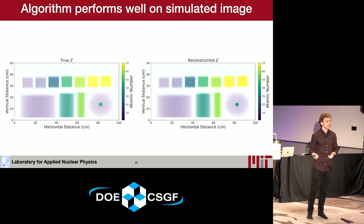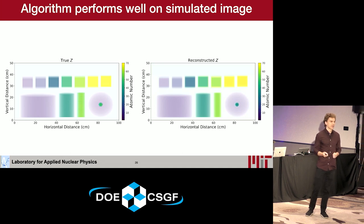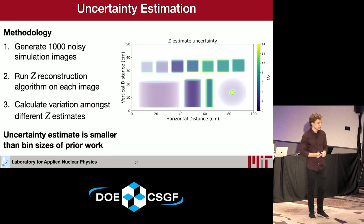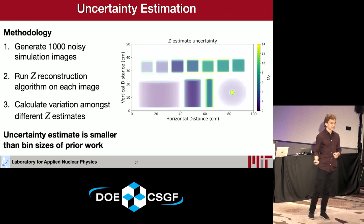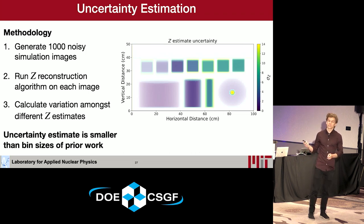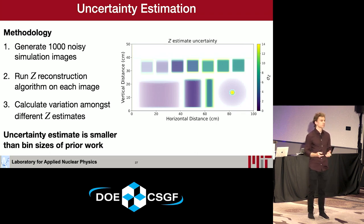The results look quite good. The left shows the ground truth atomic number of the simulated radiograph, and the right shows the output of the reconstruction framework. You can see by the color bar — which denotes atomic number — that the reconstructed Z quite accurately matches the ground truth. An associated uncertainty estimate is also provided: the color bar identifies the uncertainty in reconstructed Z for every pixel, derived by generating a large number of noisy images, running the algorithm on all of them, and measuring how much the predicted Z varies. The uncertainty is in the low single digits, which is smaller than the bin sizes of prior work — meaning this is a more precise atomic number reconstruction routine.